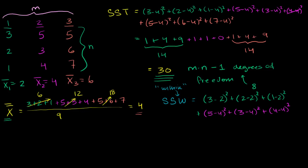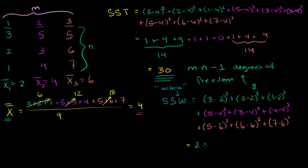And then finally, we have the third group — finding all of the sum of squares from each point to its central tendency. So we have (5 minus 6) squared plus (6 minus 6) squared plus (7 minus 6) squared. This gives us 1 plus 0 plus 1 equals 2 for the first group, 1 plus 1 plus 0 equals 2 for the second group, and 1 plus 0 plus 1 equals 2 for the third group. So our sum of squares within is 6. Our total variation was 30, and 6 of that 30 comes from variation within these samples.